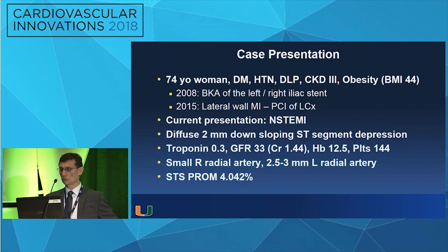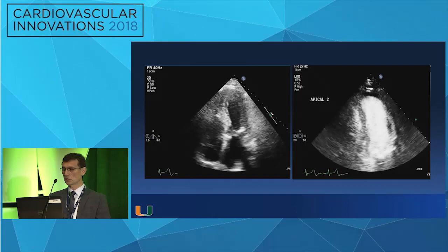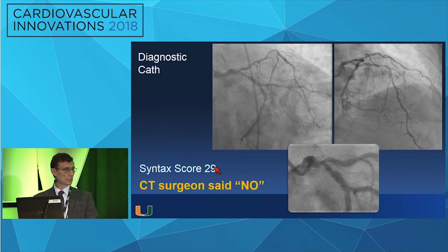She had a small radial artery on ultrasound, 2.5 to 3 millimeters on the left side. The STS score was about 4%. You can see the ejection fraction - she's very well preserved with a small cavity. This is the angiogram. As you can see, there's a 1-1-1 Medina classification lesion, plus additional disease in the LAD and in the proximal circumflex. The syntax score was 29.